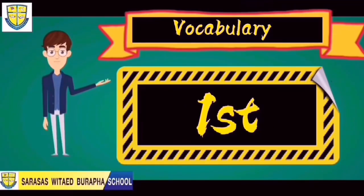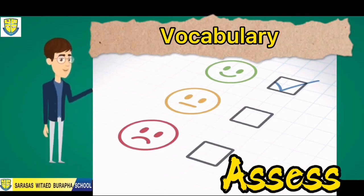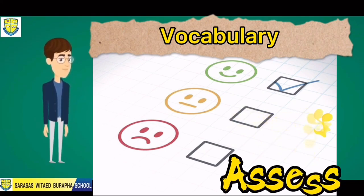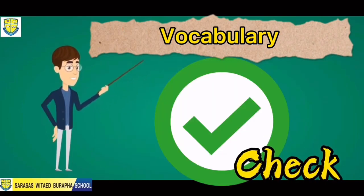Let's start with our first vocabulary word: assess. Let's spell the word assess — it's A-S-S-E-S-S. Assess. Very good. Our second vocabulary word is check. Let's spell the word check — it's C-H-E-C-K. Check. Great job.